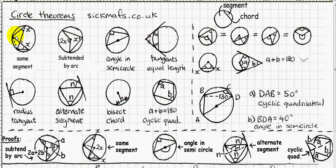The next rule: the angle subtended by the same arc, where one angle is at the circumference and one is at the centre — the one at the centre is double the one at the circumference.